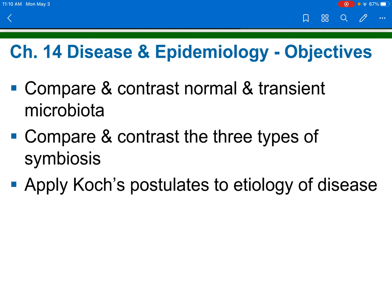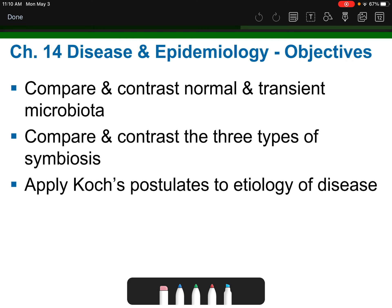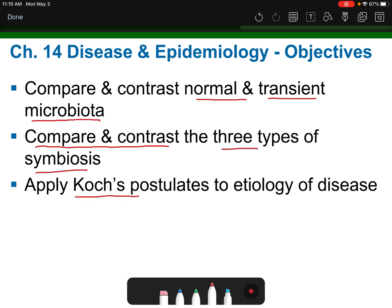Our objectives are to compare and contrast normal and transient microbiota — we talked about that right at the beginning. We're also going to compare and contrast the three types of symbiosis, and then we'll come back to Koch's postulates on the etiology of a disease — in other words, what causes a disease.